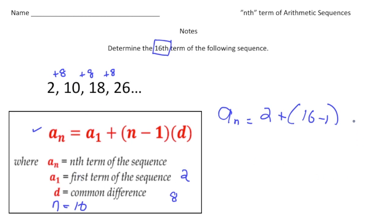Now it's going to be 2 plus 15 times 8. I've got to simplify, so using order of operations, 15 times 8 will give us 120, and 120 plus 2 gives us 122. So the 16th term will be 122. Let's try another one. If you turn the page...